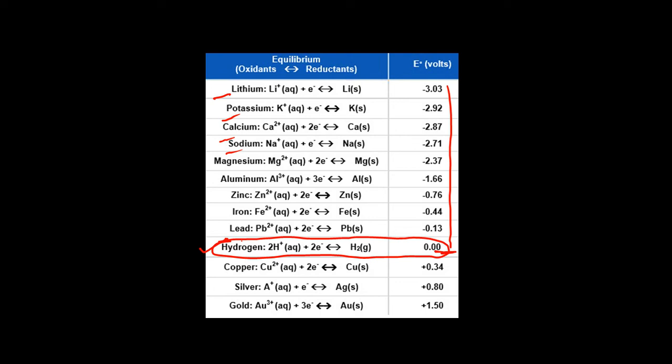All systems with negative reduction potential, when coupled with SHE, will themselves be oxidized and SHE will accept electrons and be reduced. For the systems with positive values — for example Cu²⁺ accepting two electrons to form copper, and silver — their tendency to be reduced is very high. That is why they have positive values. We will see two examples: one where SHE acts as anode (with copper) and one where SHE acts as cathode (with zinc).